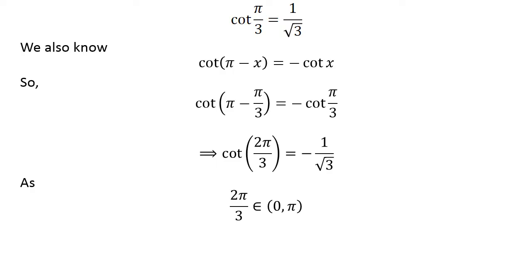As 2π/3 lies in the open interval (0, π), 2π/3 is the principal value of cot^(-1)(-1/√3).